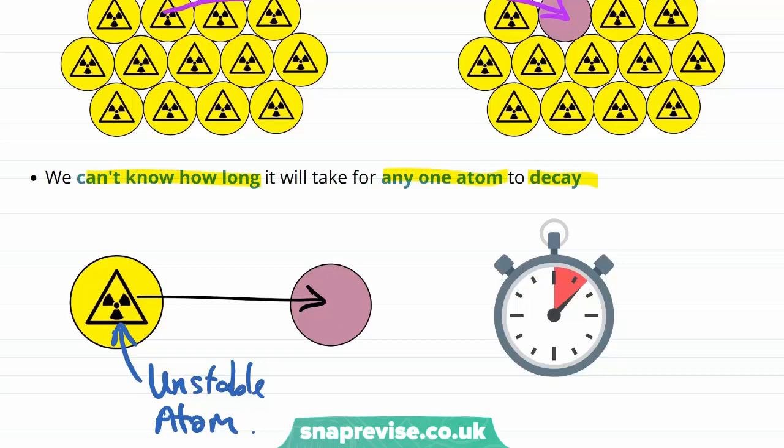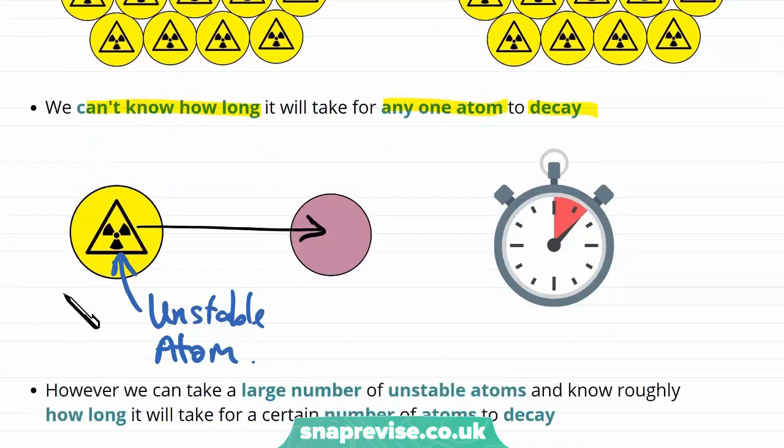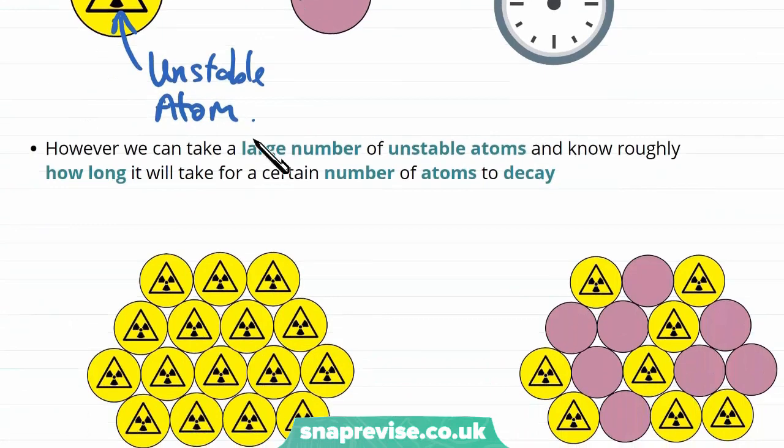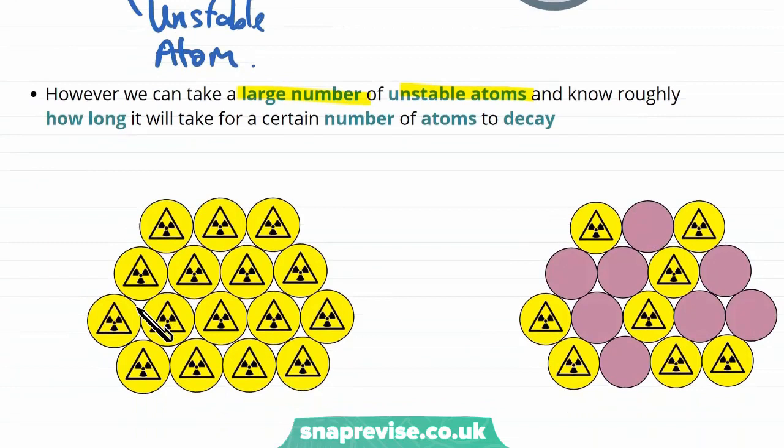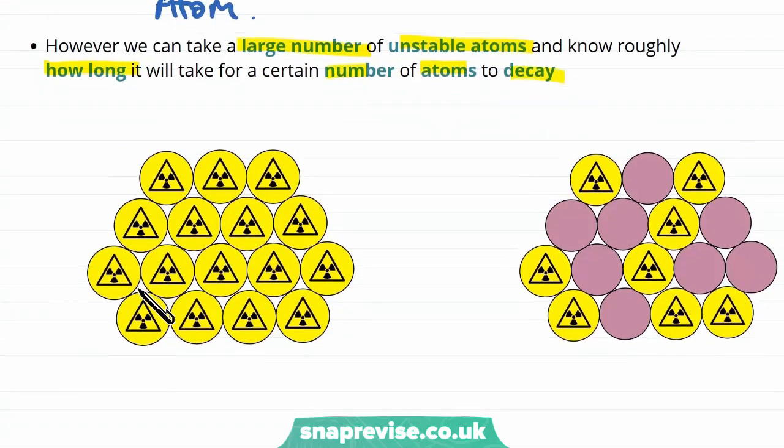Now what I've said so far almost gives the impression that there's nothing we can really know. But there are some things that we can do, we just need to talk about larger amounts of particles at once. So we can take a larger number of unstable atoms and we can know things like roughly how long it will take for a certain number of the atoms to decay. And we still don't know how long it's actually going to take for any eight atoms to decay, but we can make quite good guesses. And we're going to make this idea more precise by introducing the concept of a half-life.